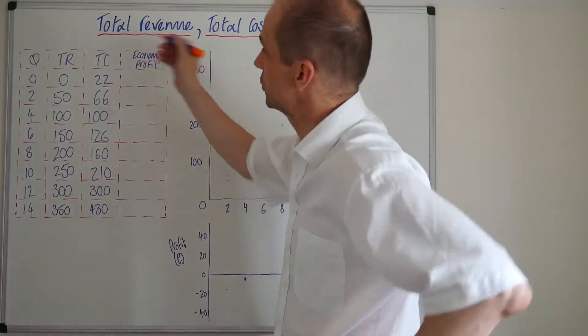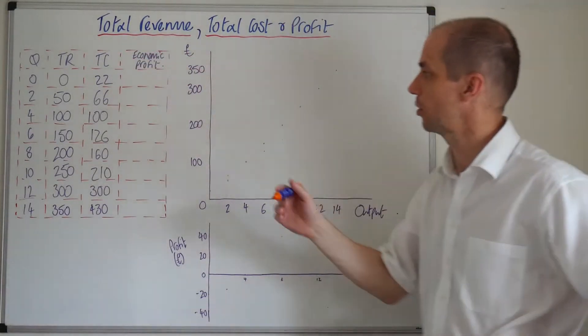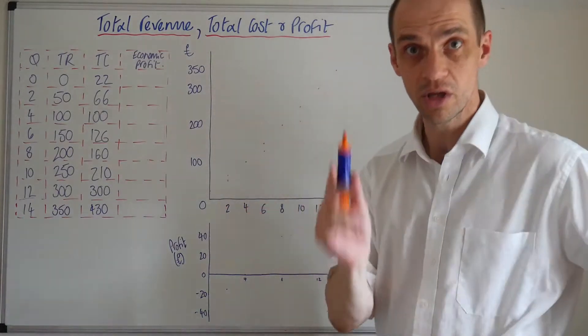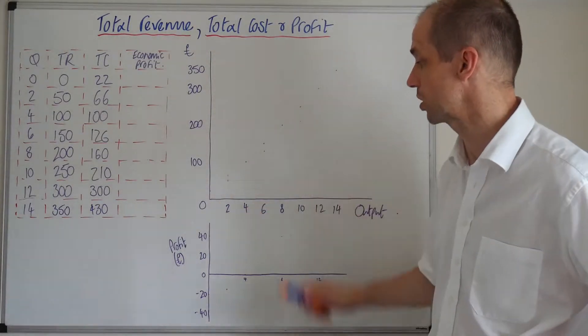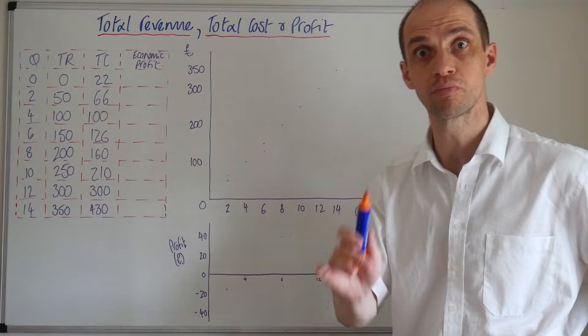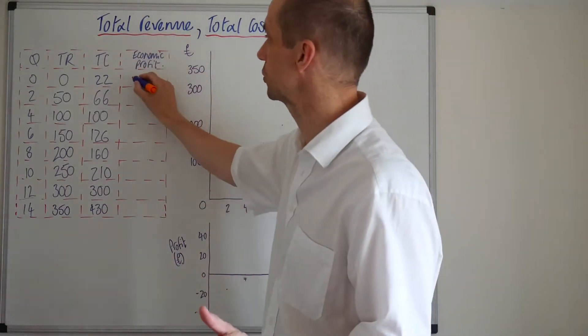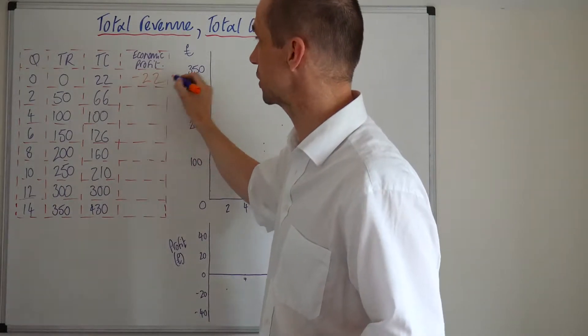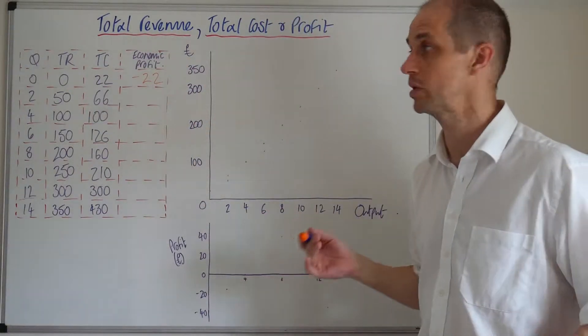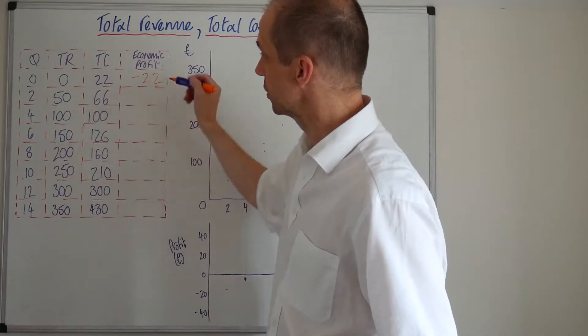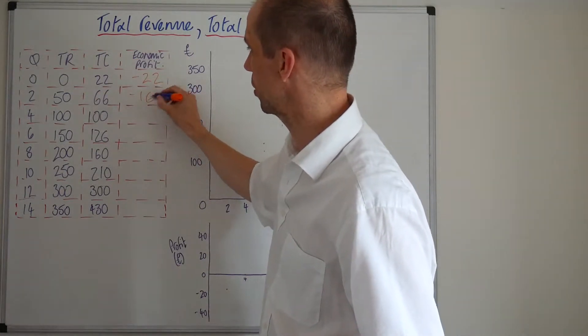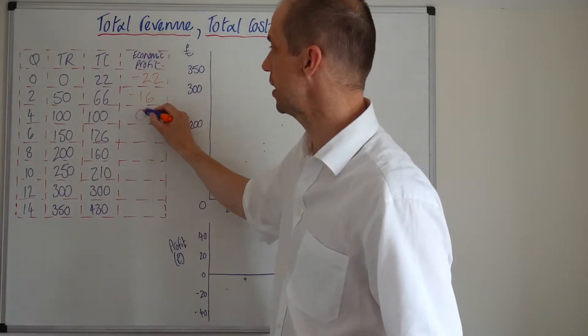So let's run through this and just calculate our economic profit, and then we'll plot out the total revenue and total cost curve together with the overall profit for the firm. So first up, total revenue minus total cost, where we can see that we start at zero output with minus 22. Then as we come down through here, we go to minus 16, then it's zero.